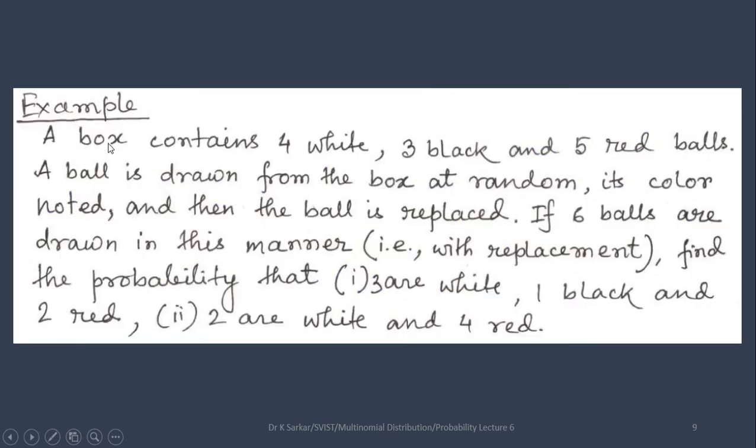Next question. A box contains 4 white, 3 black and 5 red balls. A ball is drawn from the box at random, its color noted and then the ball is replaced. If 6 balls are drawn in this manner with replacement, find the probability that 3 are white, 1 black and 2 red.